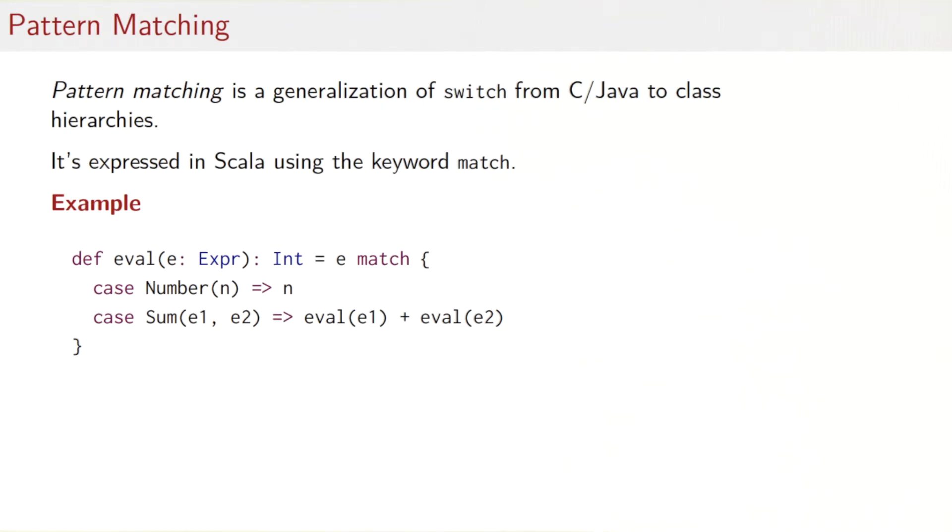So one way to see pattern matching is as a generalization of the switch statement from C or Java. In C or Java, a switch can only be applied to numbers. Now we can apply it to whole class hierarchies. In Scala, we use a slightly different syntax. Instead of switch e, we write e, match, and then come a number of cases. But to express eval using pattern matching in Scala, what you would do is we would say, well, match the given expression with a number of patterns. The first pattern would say, well, if it's a number of some given value n, then return that value. The second expression would say, well, if it's a sum with some operand e1 and another operand e2, then evaluate the two operands and form the sum. So it's quite legible.